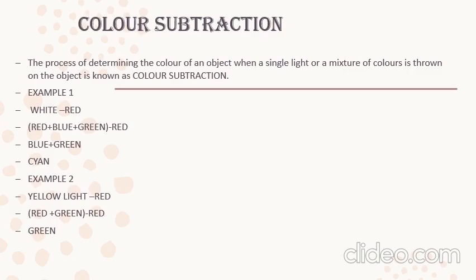Now look at example two. Instead of white light, I am going to use yellow light. Yellow light is thrown on the object, and the object is going to absorb the red color. What is your yellow light? Yellow is nothing but the combination of red and green. Red and green will give you yellow color. So red and red will get cancelled off. Therefore, what color will you get? Green. If you throw yellow light on a red-absorbing substance, you will get a green color.